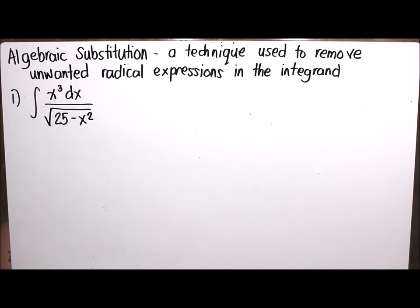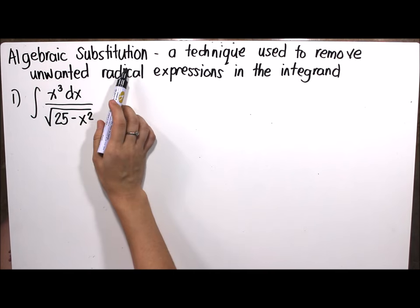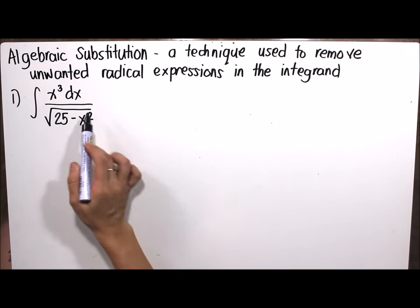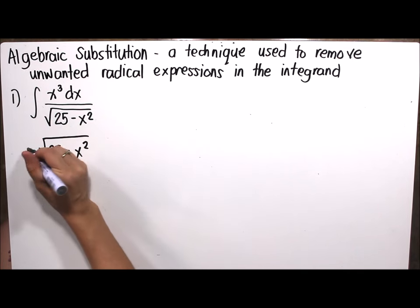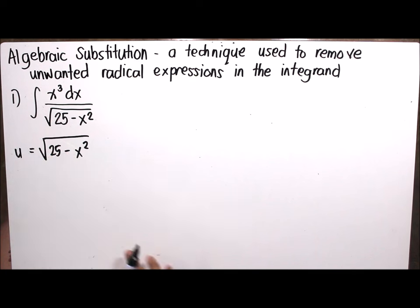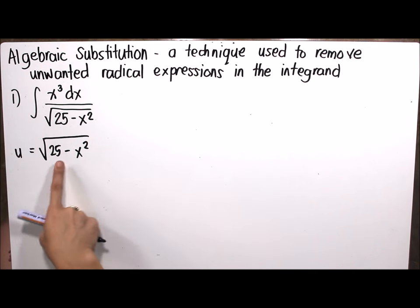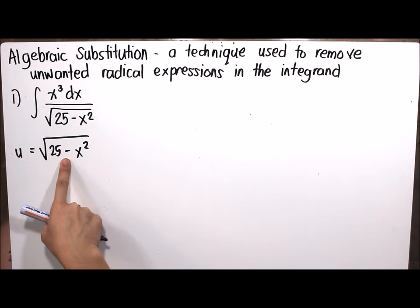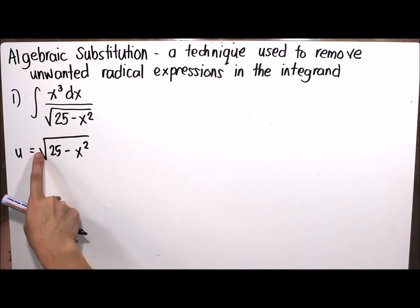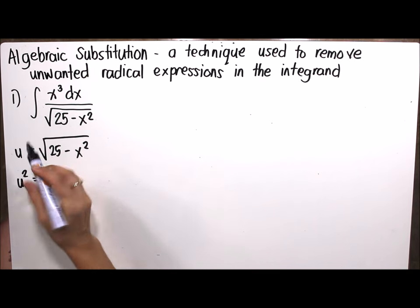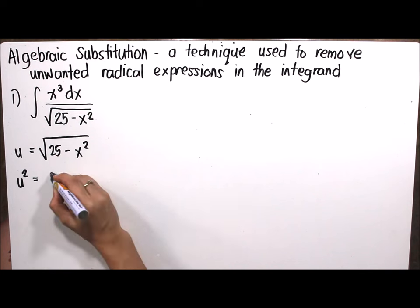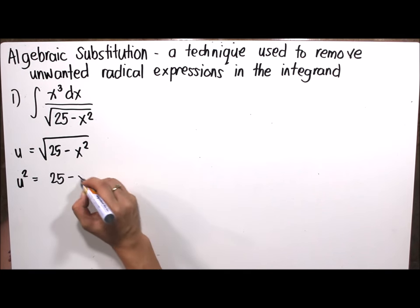To solve this, we will apply algebraic substitution by letting the radical expression, the square root of 25 minus x squared, be equivalent to variable u. We take the square of both sides to remove the radical expression, so u squared equals 25 minus x squared.